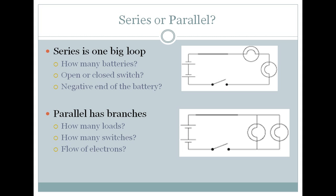So here are two examples of a series and a parallel circuit. A series is one big loop. You can see that there's only one direction or one way that the electrons could flow around the outside.